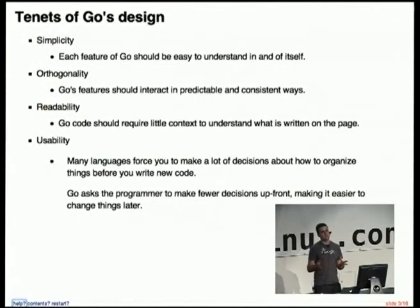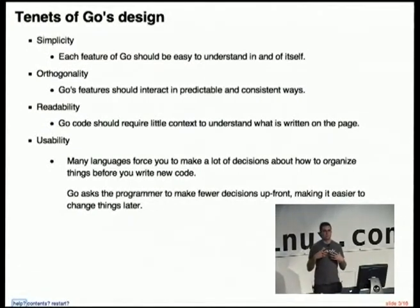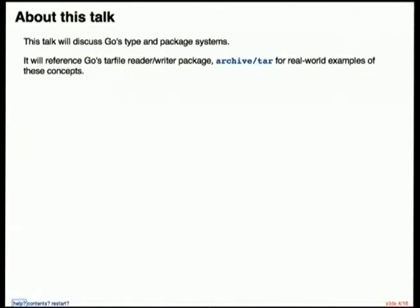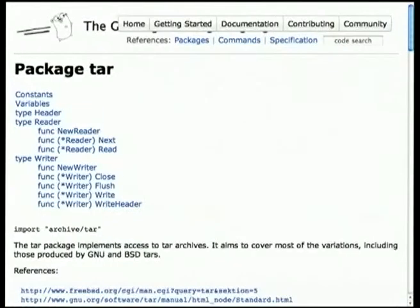And finally, we wanted it to be usable, which is really a combination of all of the above points. Many languages force you to make a lot of decisions about how you're going to structure your programs before you begin — you have to think a lot about typing and design considerations. Go gives you the opportunity to write out some data structures, write some actual code that does something before you start massaging it into an actual structured program. In this talk, I'm going to talk about Go's type system and the package system which organizes all of Go's code, and I'm going to do it in reference to Go's tar file reader and writer package from Go's standard library. This is the Go documentation, and this is the package tar — a simple package that will read and write tar files.